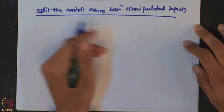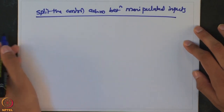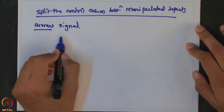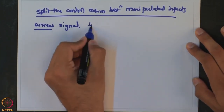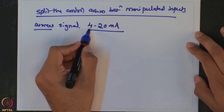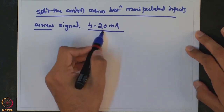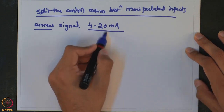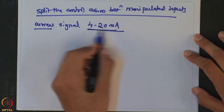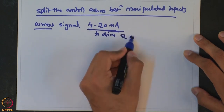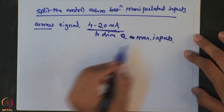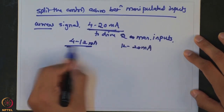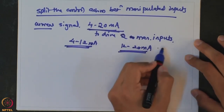How do we split this automatically? Recall that the controller sends a current signal to the manipulated input. Nowadays the standard is a current signal between 4 to 20 milliamperes, where 4 mA means the valve should be at its zero state and 20 mA means the valve should be at the other extreme. For a fail-close valve, at 4 mA it is completely closed and at 20 mA it is completely open. We use the same range to drive two manipulated inputs by splitting it — for example, 4 to 12 mA for one valve and 12 to 20 mA for the other. That is why it is known as a split range design.